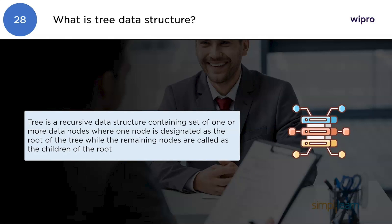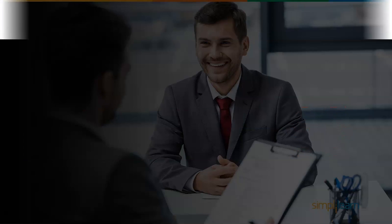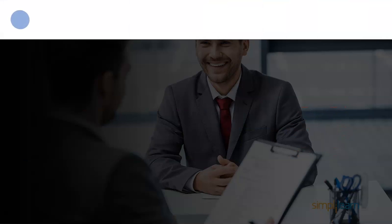What is a tree data structure? A tree data structure is a recursive data structure containing a set of one or more data nodes, where one node is designated as the root node of the tree while the remaining nodes are called child nodes.